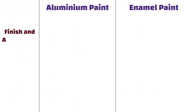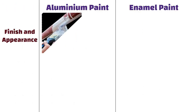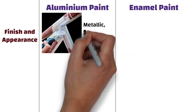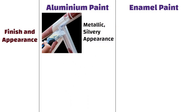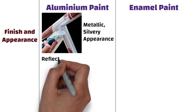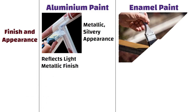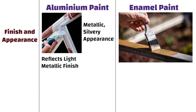Finish and Appearance. Aluminum paint typically has a metallic silvery appearance when dry. It reflects light and provides a metallic finish. Enamel paint, on the other hand, offers a glossy and smooth finish in a wide range of colors.